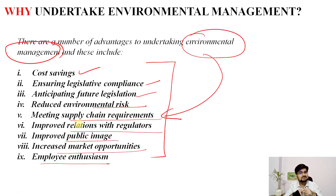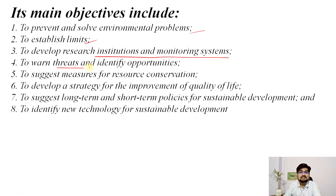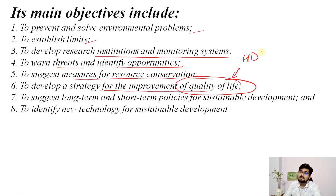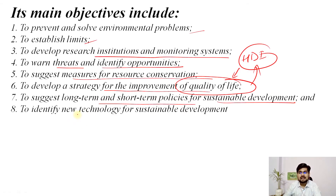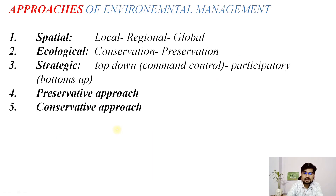The main objectives of environmental management are: to prevent and solve environmental problems; to establish limits of usage of resources; to develop research institutions and monitoring systems; to warn of threats and identify opportunities; to suggest measures of resource conservation; to develop a strategy for improvement of quality of life — which the Human Development Index and Happiness Index incorporate; and to suggest long-term and short-term policies and identify new technologies for sustainable development.